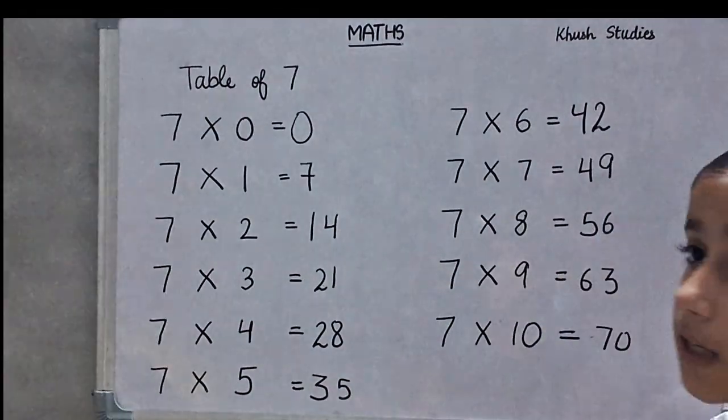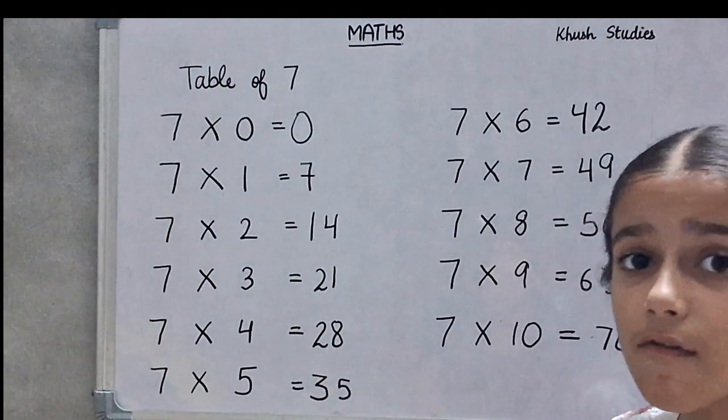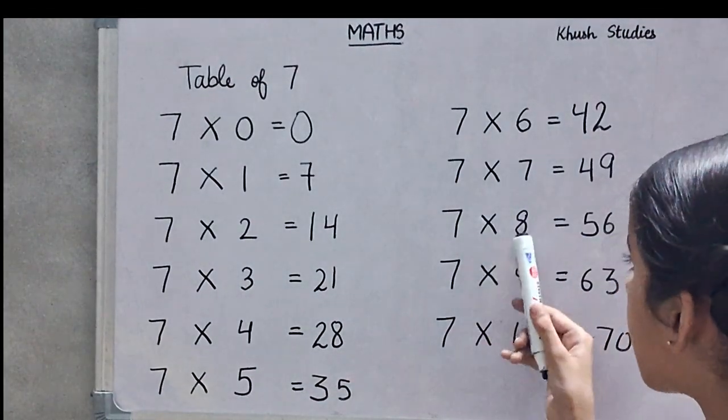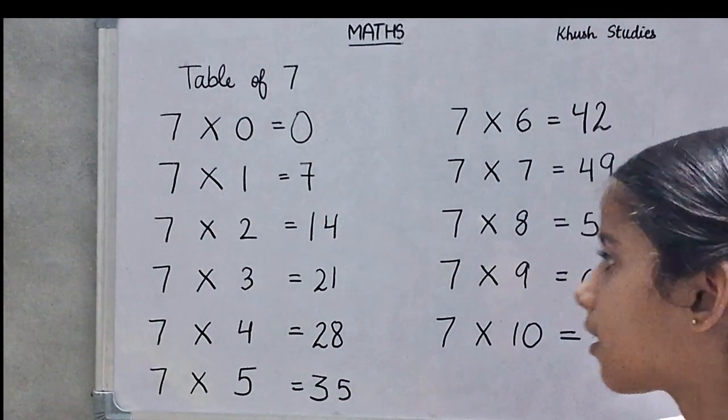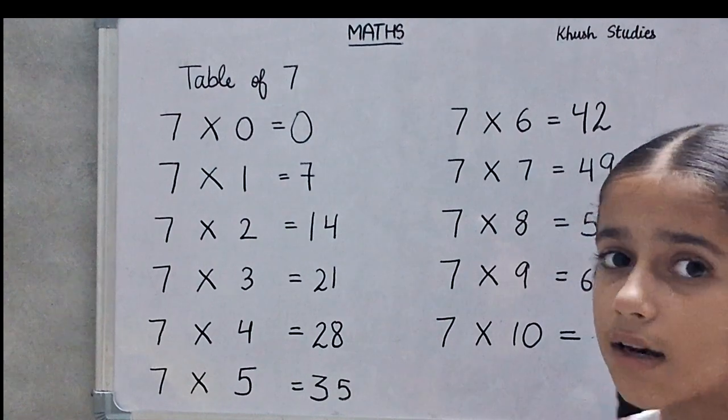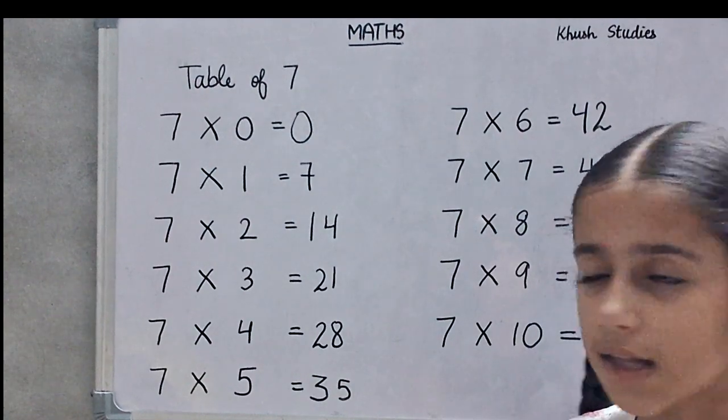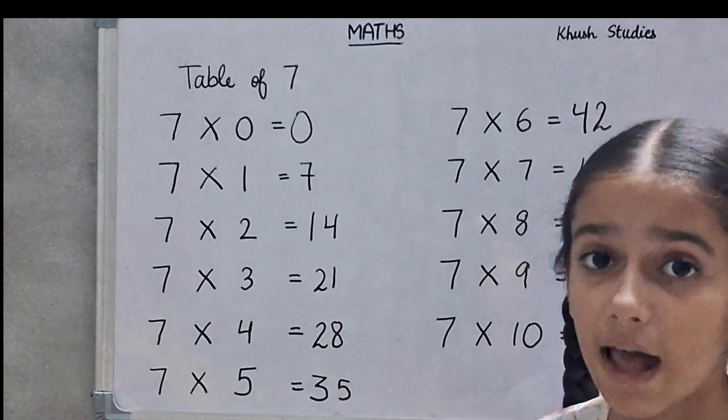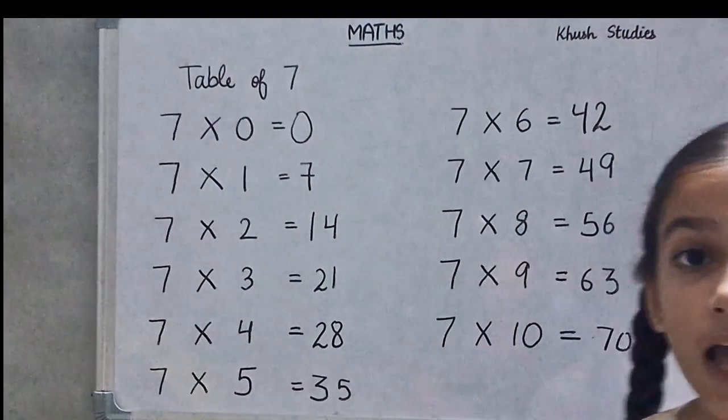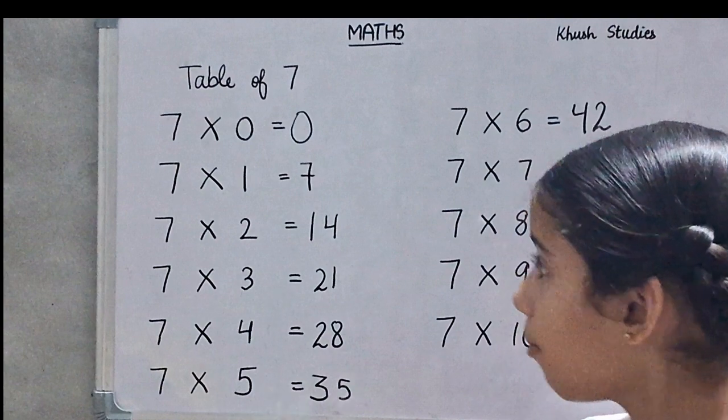7 sevens are 49. 7 sevens are 49. 7 eights are 56. 7 eights are 56. 7 nines are 63. 7 nines are 63. 7 tens are 70. 7 tens are 70. I hope you learned the table of 7.